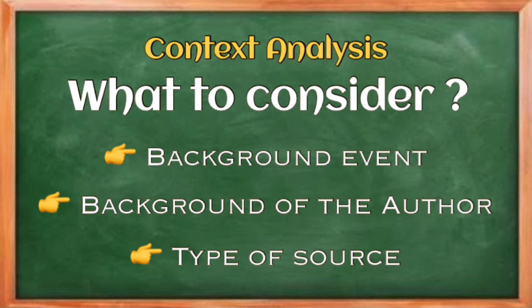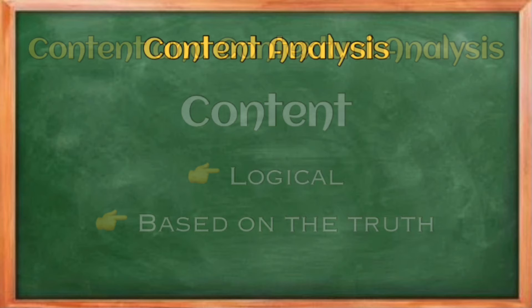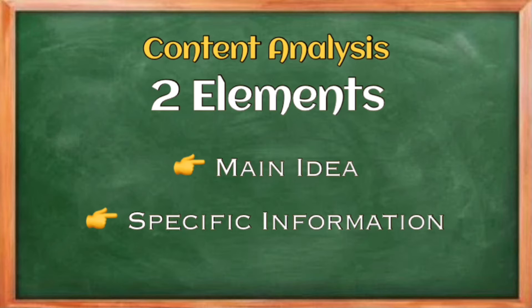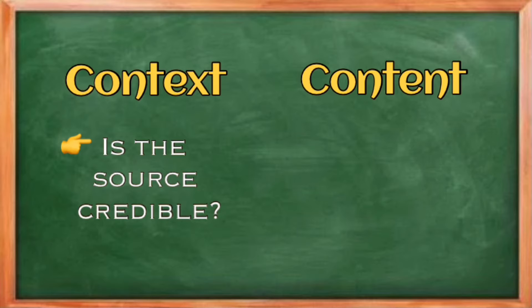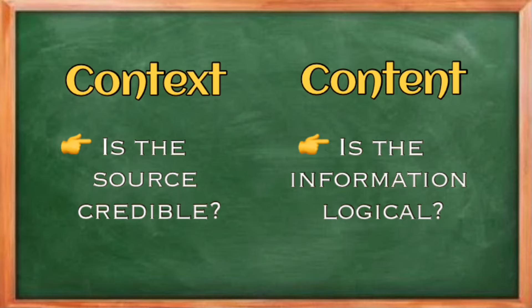Content, on the other hand, should be logical and based on the truth. In content analysis we have two elements: first is the main idea, and the second is the specific information. The main idea is the main point around which our analysis will revolve, supported by specific information. In short, context answers the question: is the source credible? While content answers the question: is the information logical?